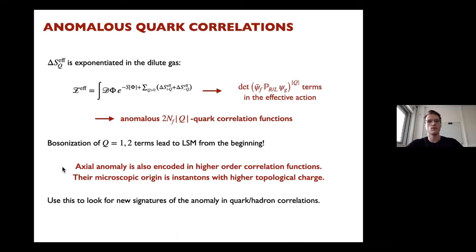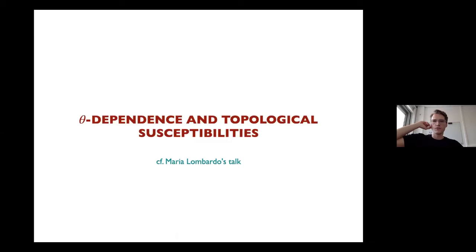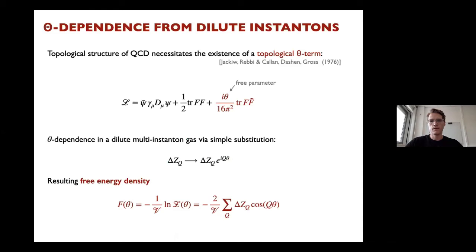The bottom line is: the axial anomaly is encoded in higher-order correlation functions. Perhaps obvious. Less obvious is that their microscopic origin is instantons with higher topological charge. One could use this to look for new signatures of the anomaly in hadronic correlations, but I want instead to connect to the theta dependence and topological susceptibilities.